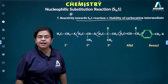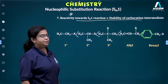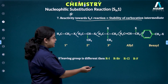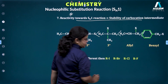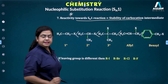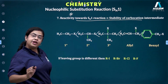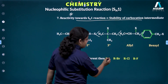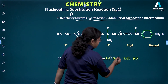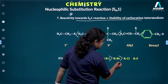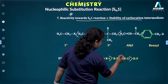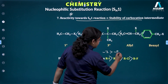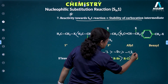If the leaving group differs, the rate is governed by the leaving group ability of the halide ion: RI > RBr > RCl > RF, because I⁻ is a better leaving group than Br⁻, which is better than Cl⁻, which is better than F⁻.